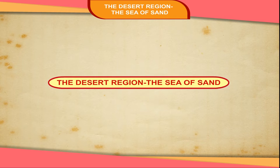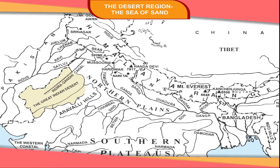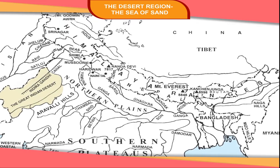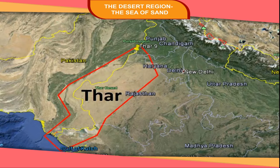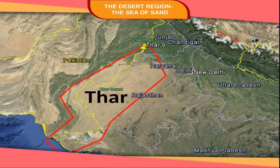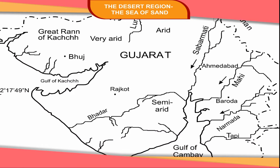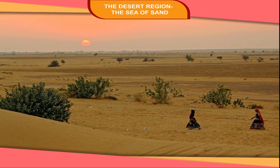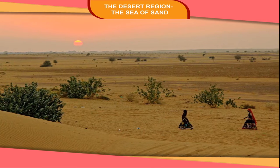The Aravalli Hills divide Rajasthan into two parts. The western part of the state remains dry throughout the year and is known as the Great Indian Desert or the Thar Desert. The Thar Desert touches the border of Pakistan in the west and extends from the Rann of Kutch in Gujarat beyond the Looney River northward. The desert is about 500 kilometers long and 100 to 300 kilometers wide.